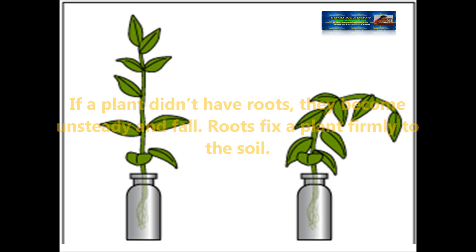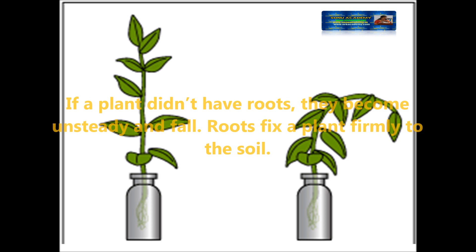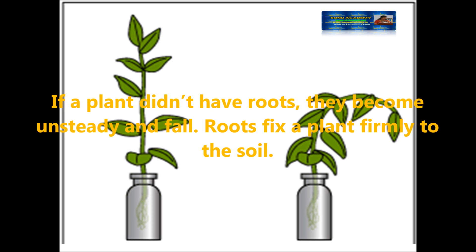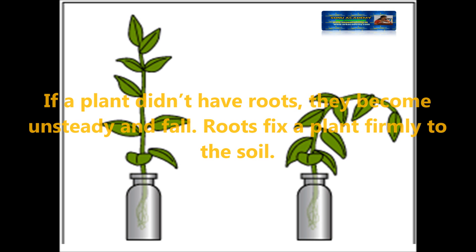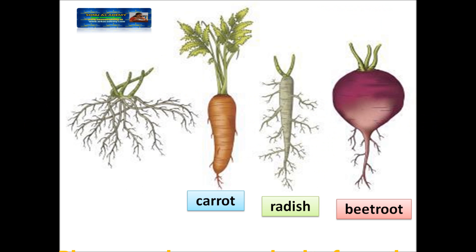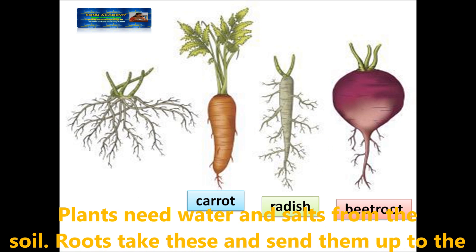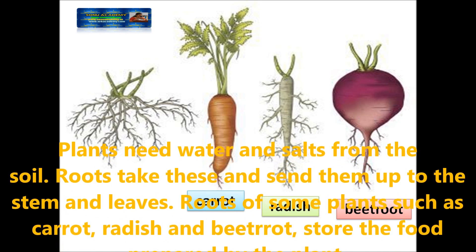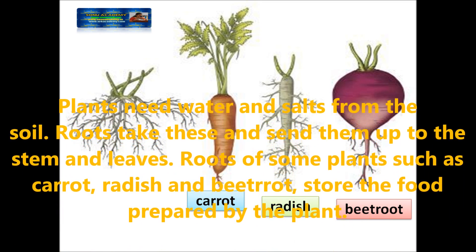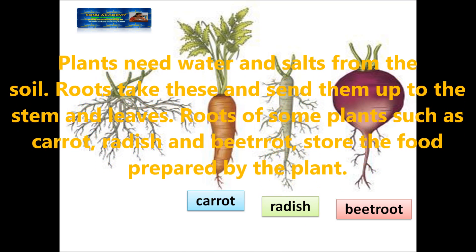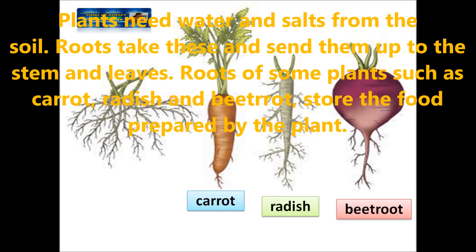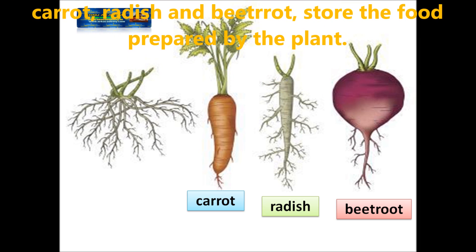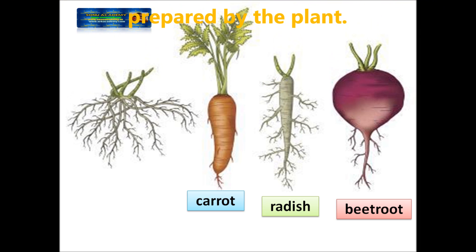Let us see what the roots do. If a plant did not have roots, it would become unsteady and fall down. Roots fix a plant firmly to the soil. Plants need water and salts from the soil. Roots take these up to the stem and leaves. Roots of some plants, such as carrot, radish, and beetroot, store the food material which is prepared by the plant.